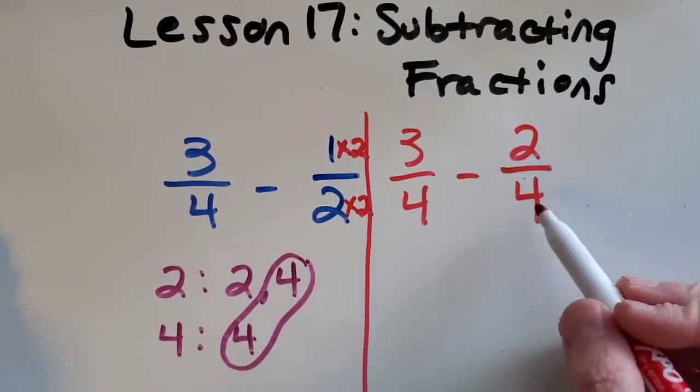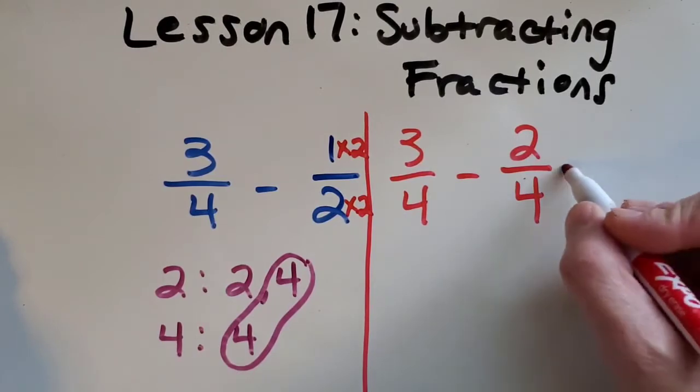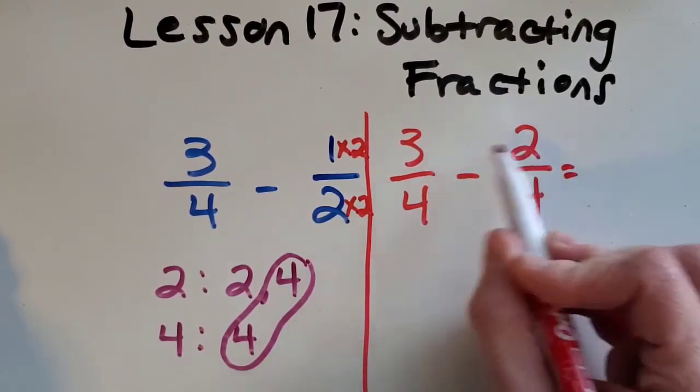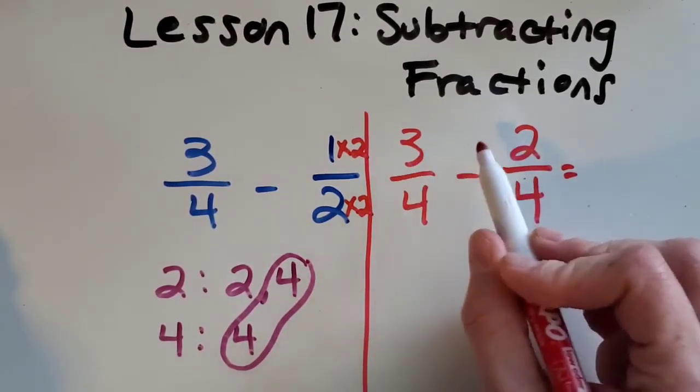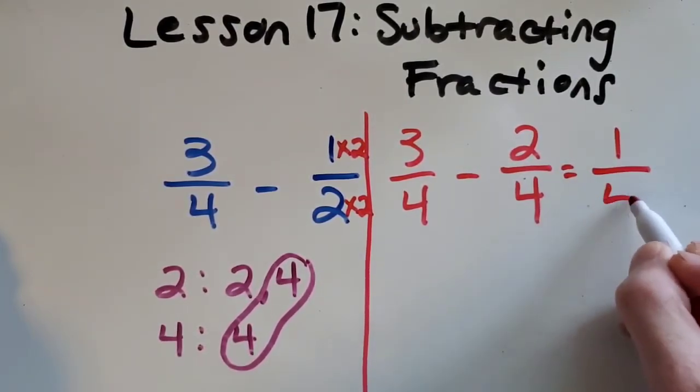So now it looks just like that first problem we did that was really easy. Now all we have to do is just worry about the numerator. What is 3 minus 2? It's 1 and I keep my denominator the same.